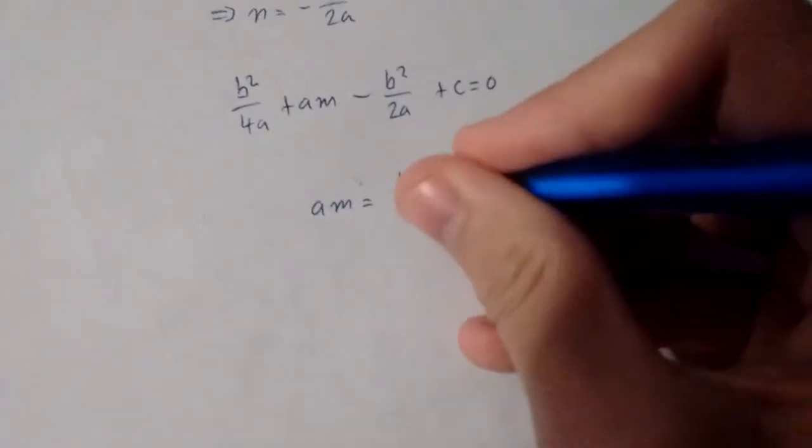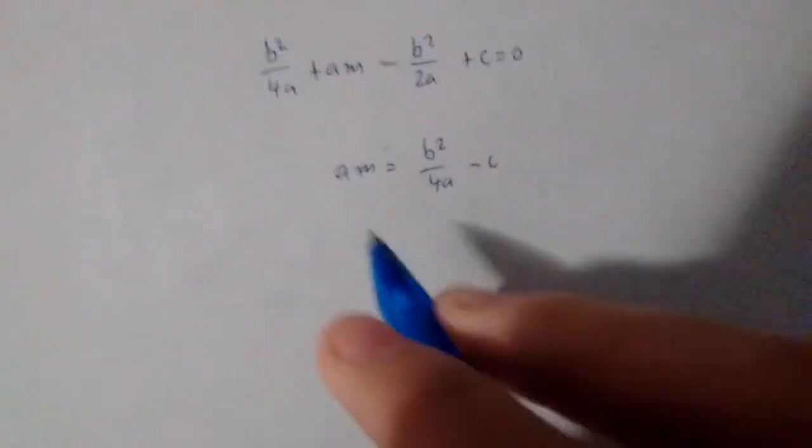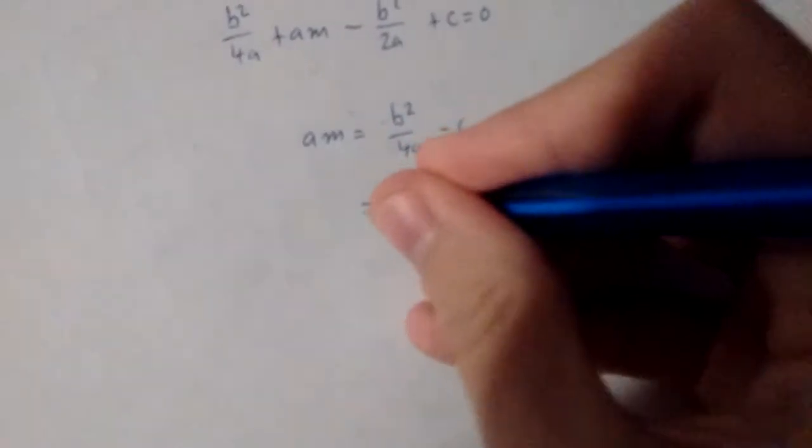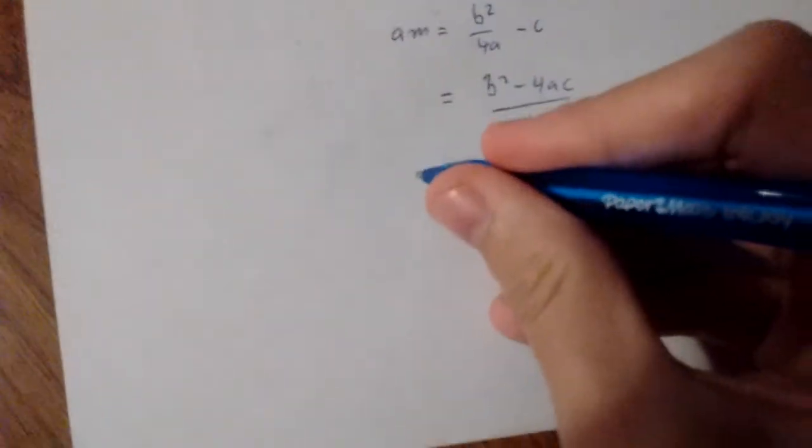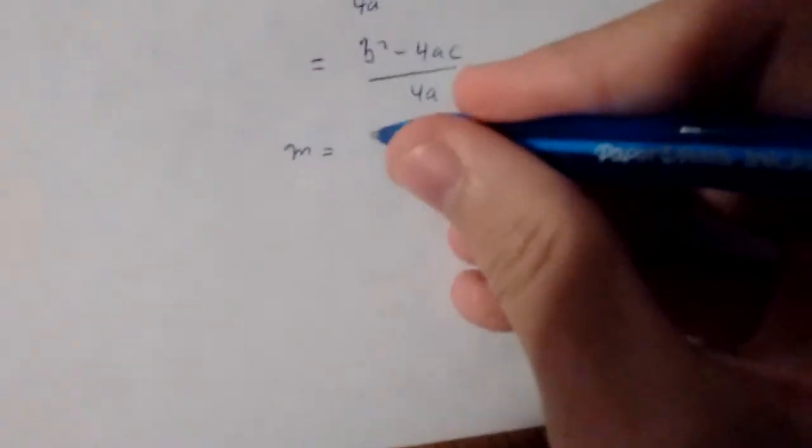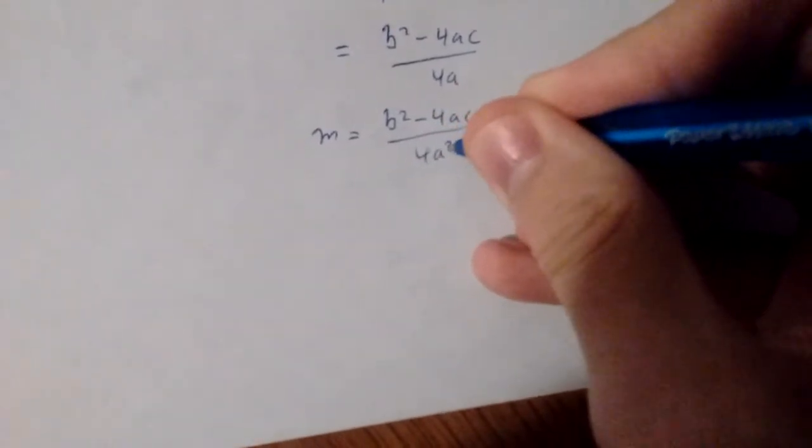We get b squared over 4 a minus c on the other side. We can combine the denominator to get b squared minus 4 a c over 4 a. And if we divide by a, we get that m equals b squared minus 4 a c over 4 a squared.